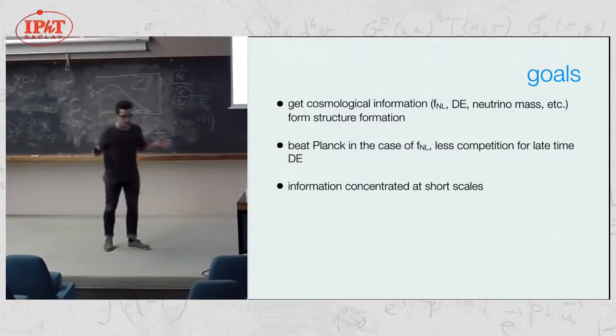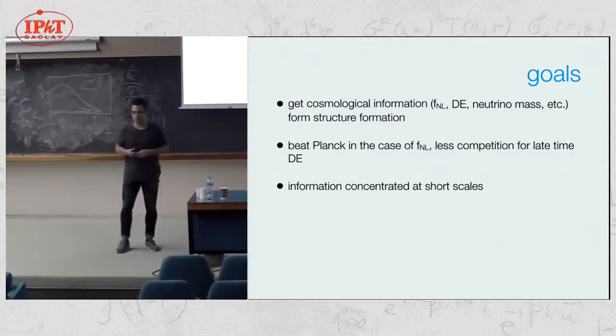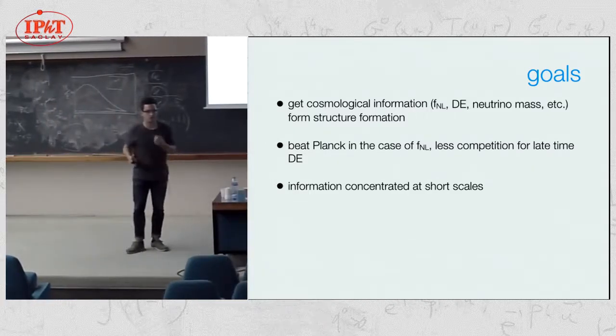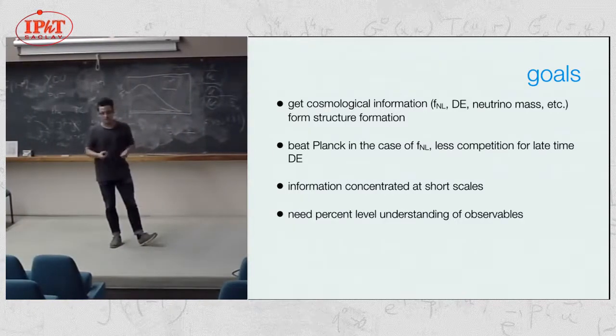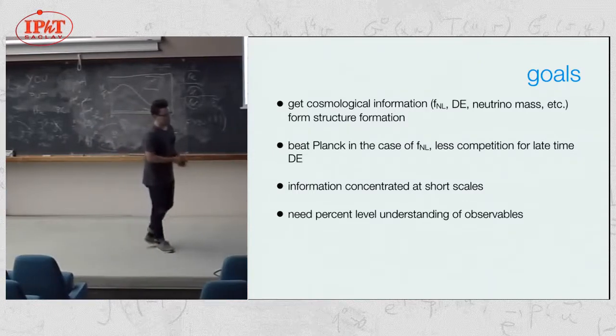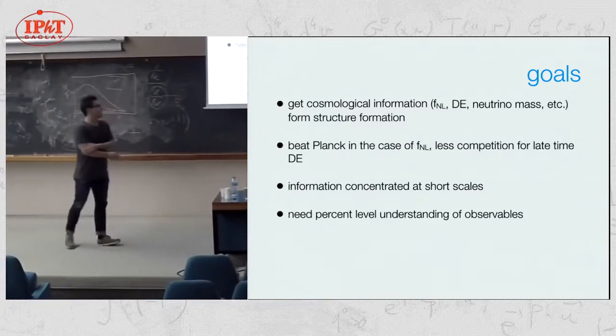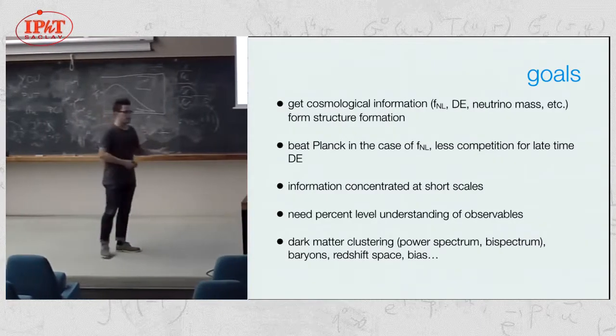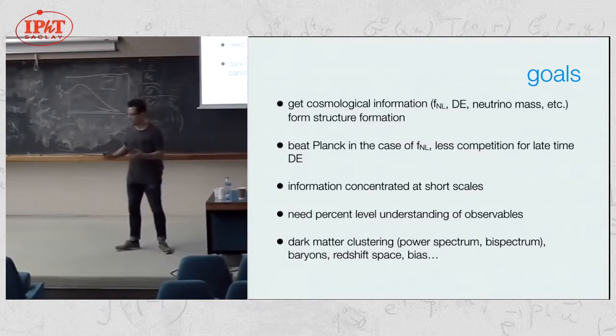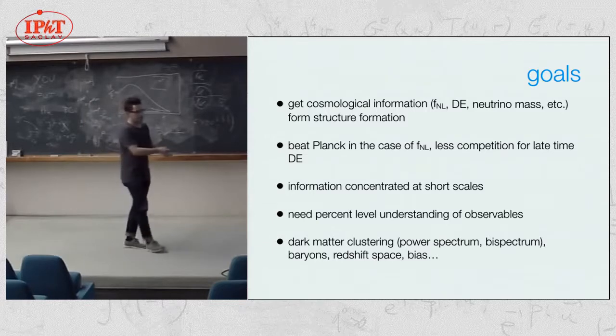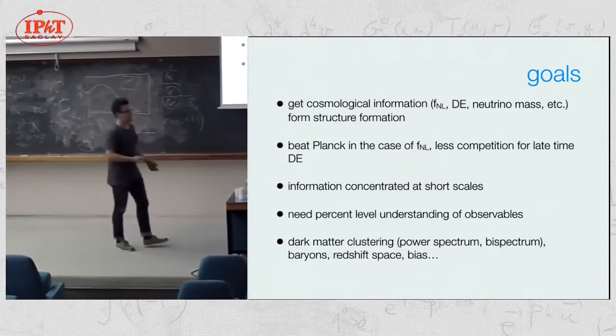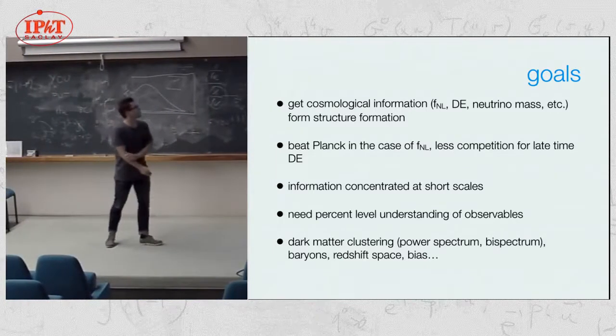If you go to smaller scales, there's more modes that you can measure, which are better statistics, more information on small scales. The idea is that we want to understand all of the observables in large scale structure to as high accuracy as we can. This includes the dynamics of dark matter clustering, the power spectrum, bi-spectrum, effect of baryons, bias, redshift space distortions, basically everything you need to connect the galaxy catalog to some observable or prediction from a theory.